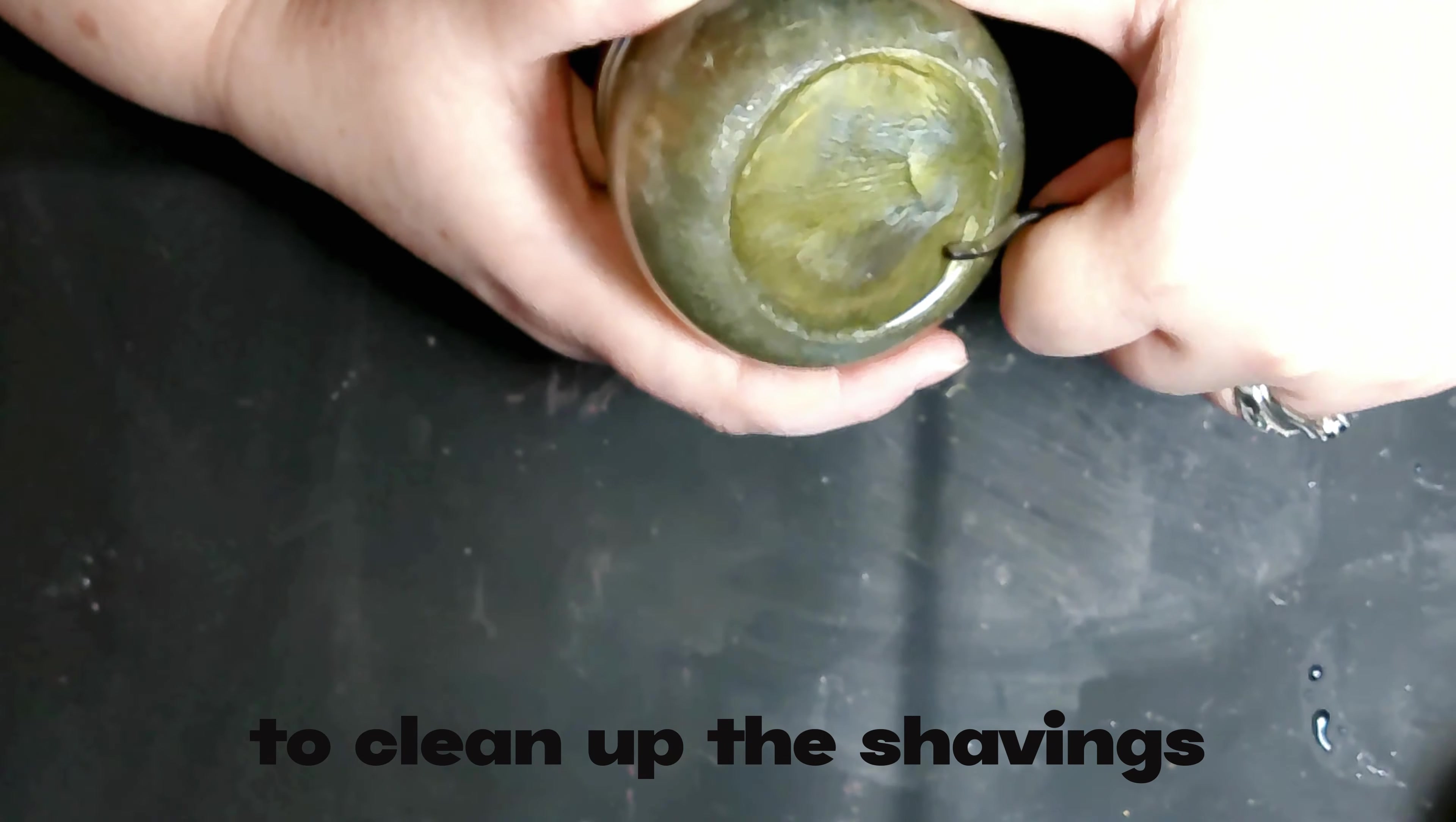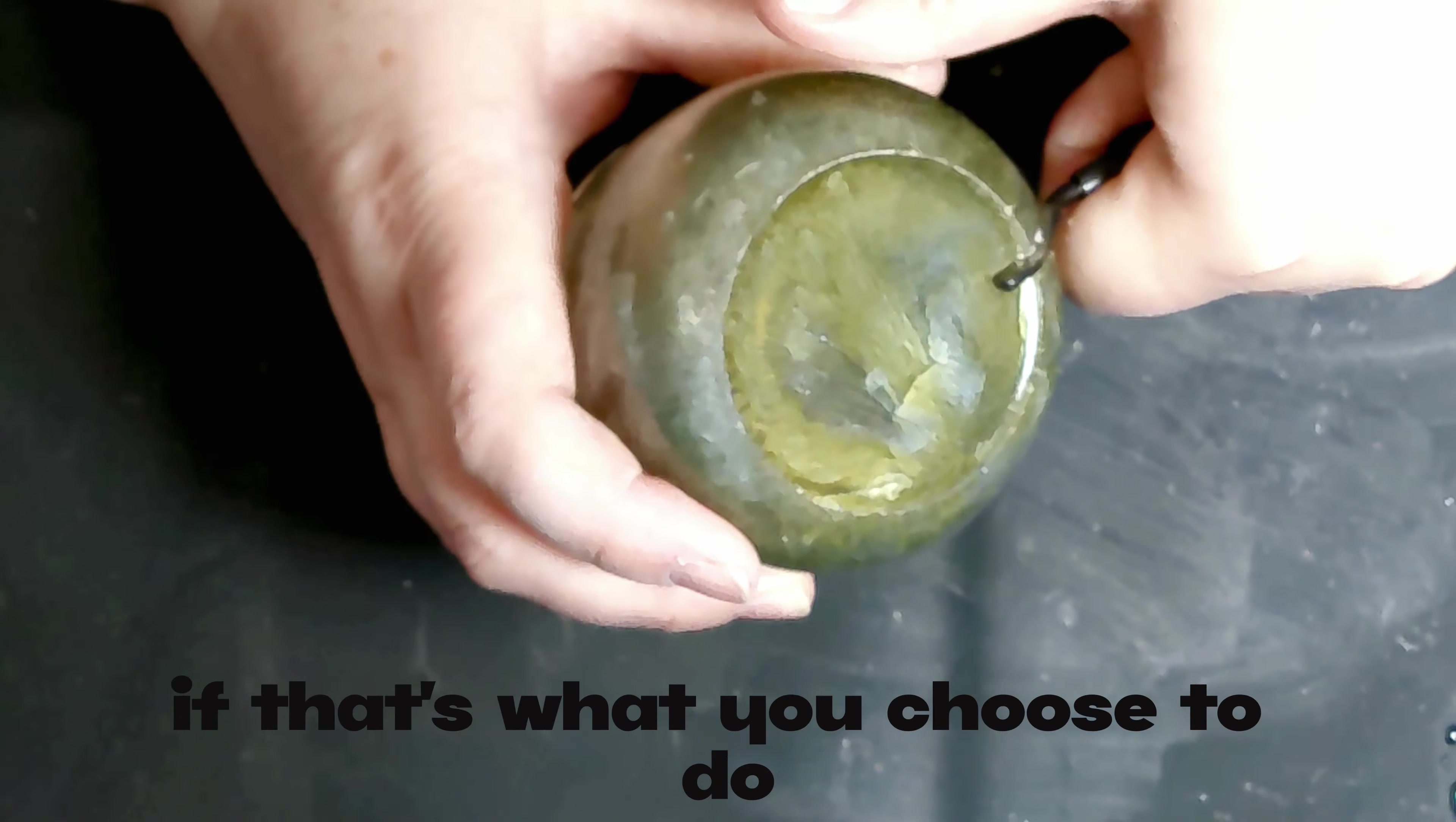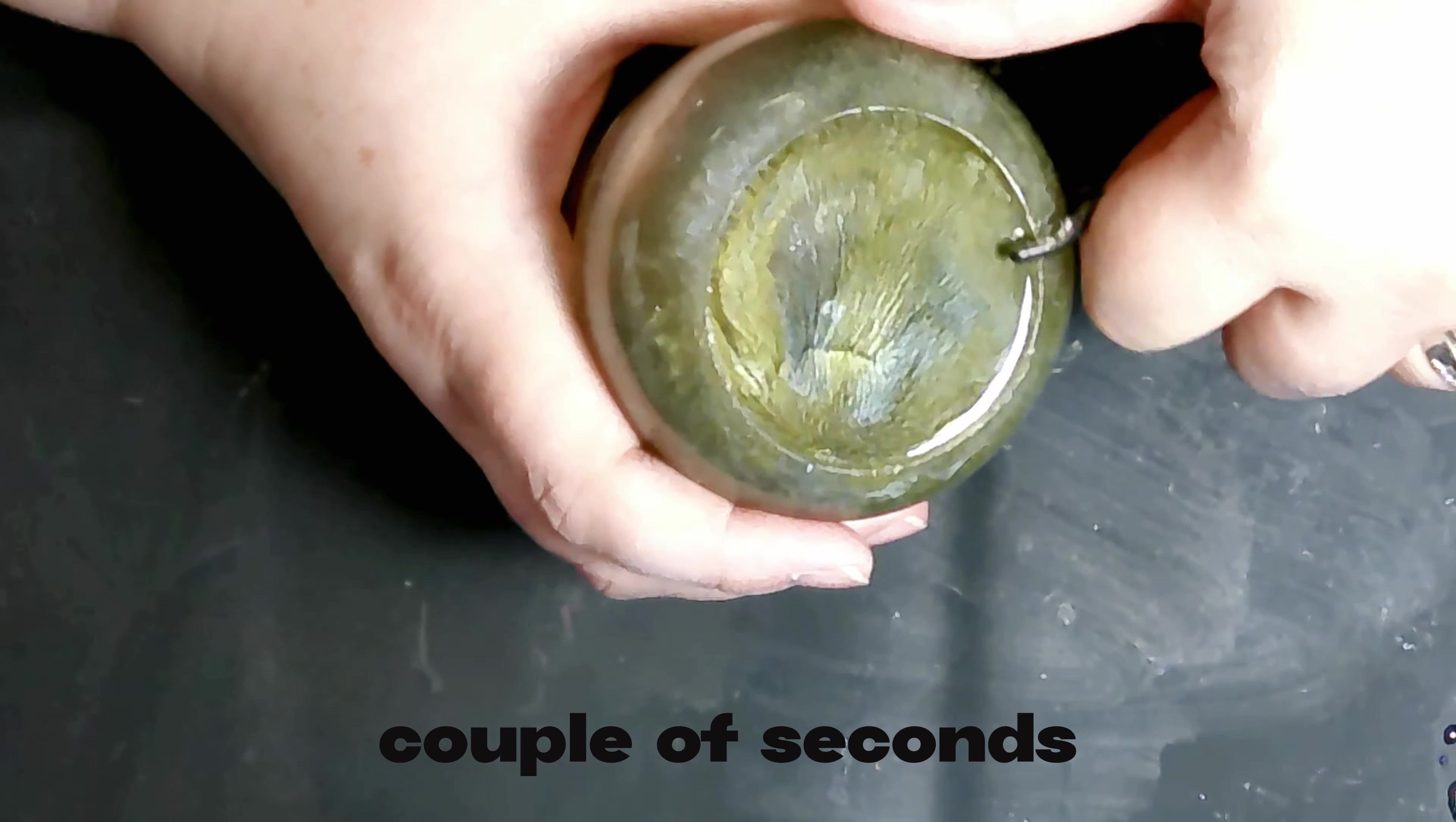Then you get the dust everywhere, and it's a little bit easier just with some tape to clean up the shavings than it is to clean up all the resin dust that comes along with filing or sanding it, if that's what you choose to do. And it's quick, it's easy, a couple of seconds and you're done.